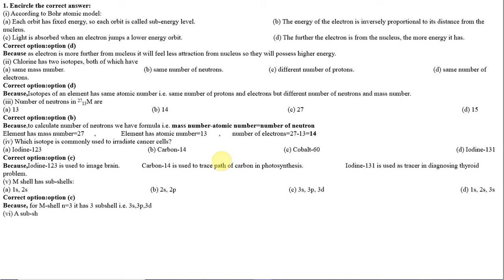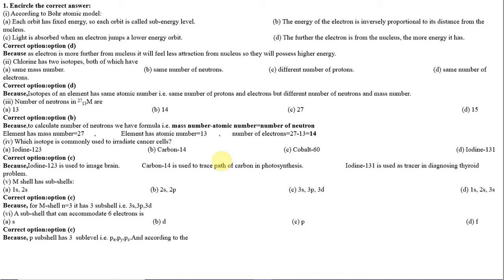Number 6: A subshell that can accommodate six electrons is: Option A: s, Option B: d, Option C: p, Option D: f. The correct option is C, the p subshell, because the p subshell has 3 sublevels — px, py, pz — and each sublevel can accommodate a maximum of 2 electrons, so the p subshell holds 6 electrons total.